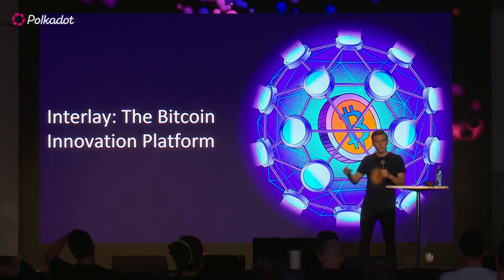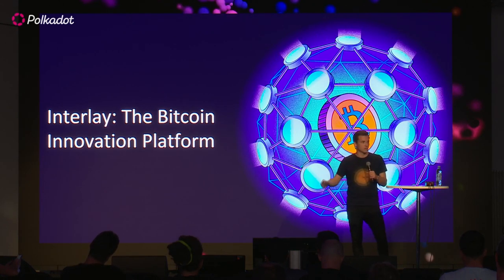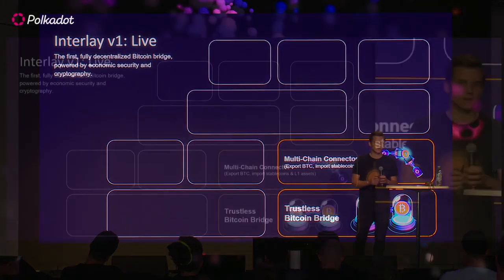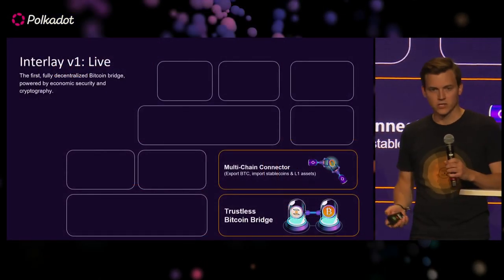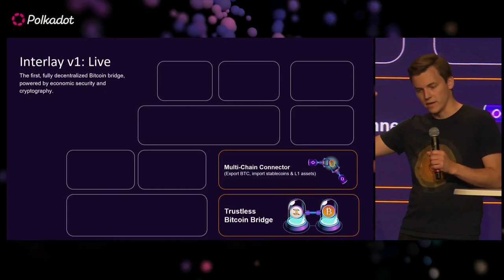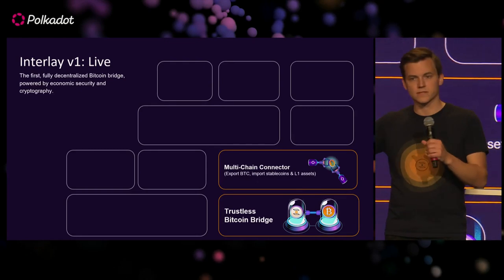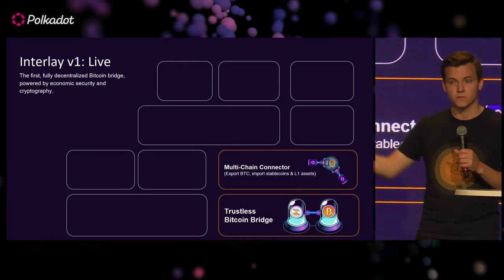This is why we started building Interlay. Our goal is to build a platform that enables Bitcoin innovation. Interlay V1 went live more than a year ago as the first fully decentralized Bitcoin bridge, powered by economic security and cryptography. On top of that, we have a layer of what we call multi-chain connectors — being part of Polkadot allows us to connect to all sorts of parachains, and in the near future also connecting to Ethereum, Cosmos, and other chains.